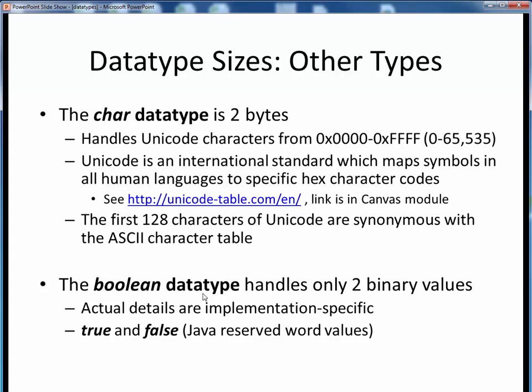Finally, the Boolean data type is actually implementation-specific, but that doesn't really matter to us, because the Boolean data type handles only two distinct values, true and false, which are also both Java-reserved words.